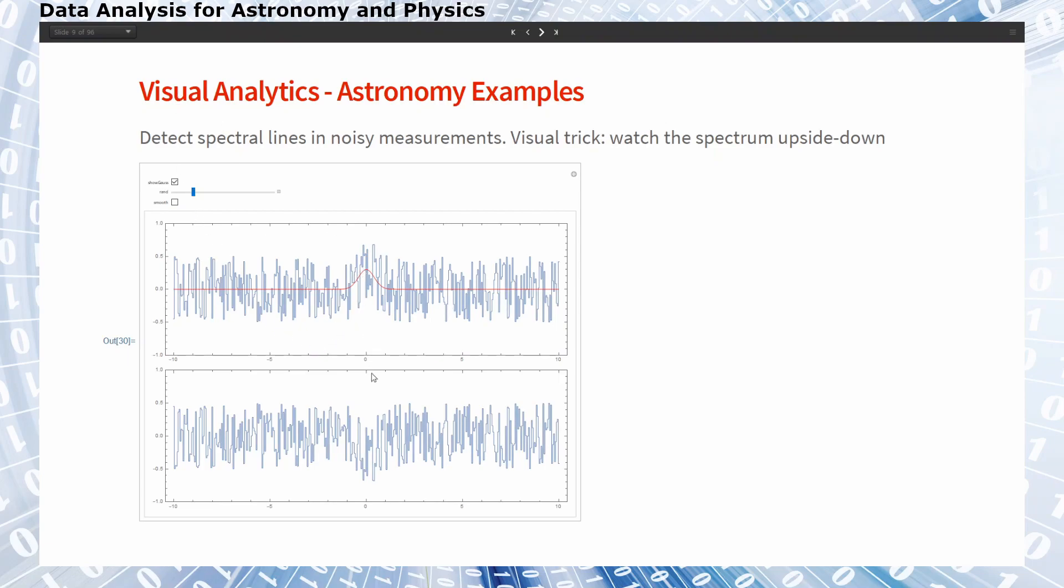And on the bottom figure you see the same spectrum upside down and if you look at it you note that the depression here that corresponds to the stronger signal here is still visible. So that means you would visually say yes there we have a detection.